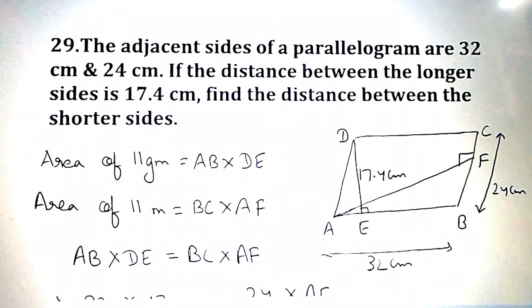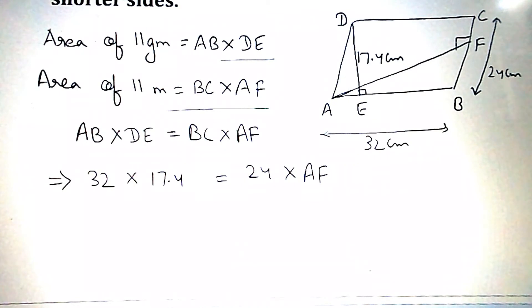Thus we can write here area of a parallelogram AB into DE, and also area of parallelogram BC into AF. Both the areas are equal, then we can write here AB into DE is equal to BC into AF. Putting the values, then we get 32 into 17.4 is equal to 24 into AF.